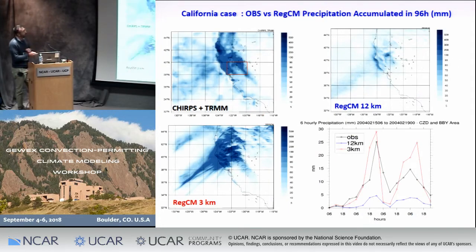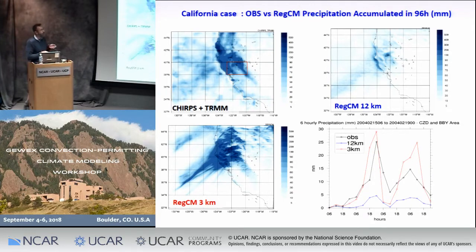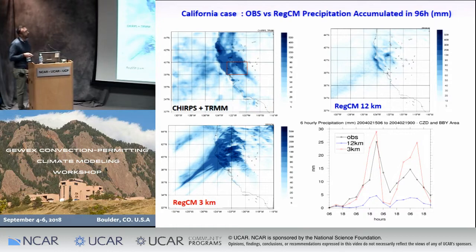What about the model results? Here we have the 96-hour accumulated precipitation. Here we have the observation. In this plot we have the RegCM simulation at 12 kilometers, which was used as boundary condition and initial condition for the convection-permitting simulation at 3 kilometers. As you can see, the simulation at 12 kilometers heavily underestimates the event, while the convection-permitting simulation is able to reproduce the event better — in particular the maximum over the coastal mountain — but also shows a tendency to overestimate the precipitation particularly over the sea.